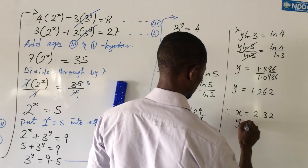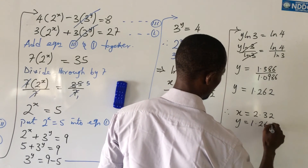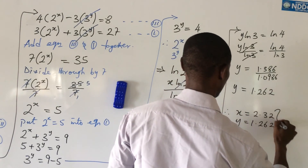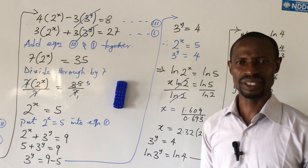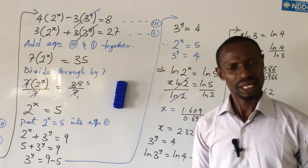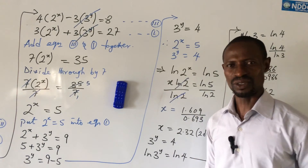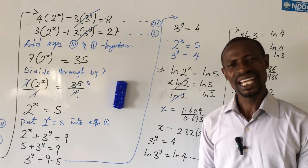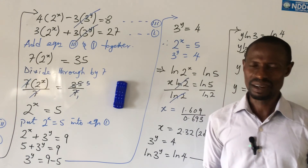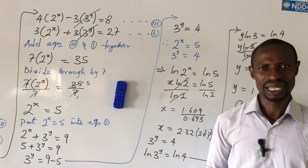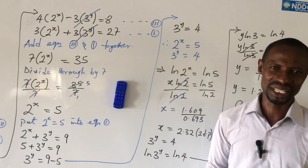Therefore, x equals 2.32 and y equals 1.262. If you have any questions regarding this solution, drop them in the comment section. If you gained some value from this, give the video a thumbs up. Thanks — remember we love you and Online Maths TV loves you too. Thanks for being there.